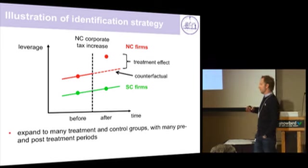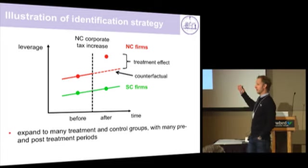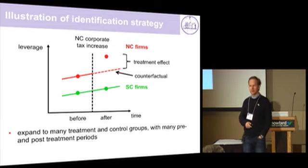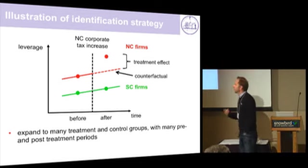We don't stop there. We have like 20 years of all the states, so that means we have many, many of those events — many treatments, many control groups, with many pre- and post-treatment periods. This is good because if you just had the North and South Carolina event, there could still be some subtle dimension along which they differ, preventing you from inferring the counterfactual. But since we're repeating this over and over again across different circumstances, the hope is that on average all this washes out, so that any error conditional on controls on average should be zero.